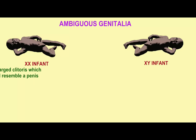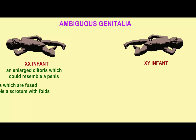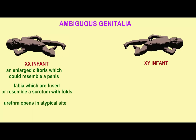Genitalia would be considered to be ambiguous in an infant which was chromosomally XX but which had an enlarged clitoris, which might resemble a penis, labia which were fused or perhaps even resembling a scrotum with folds, and a urethra opening in an atypical site.